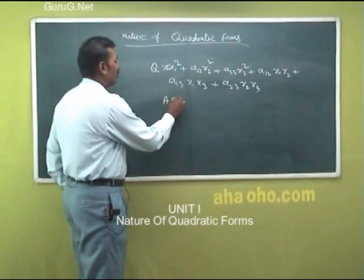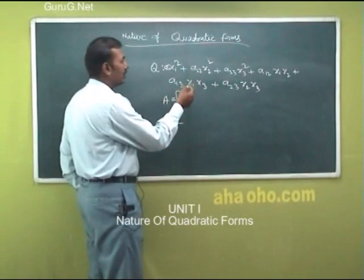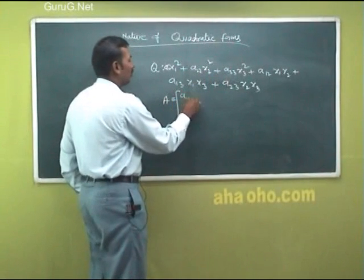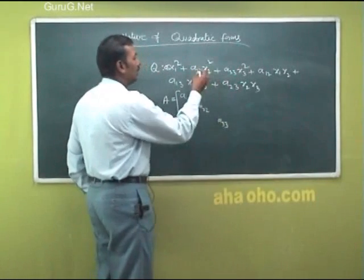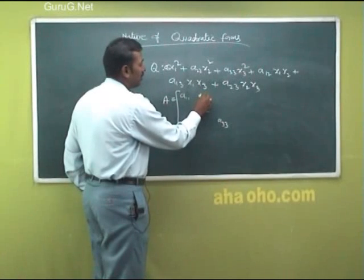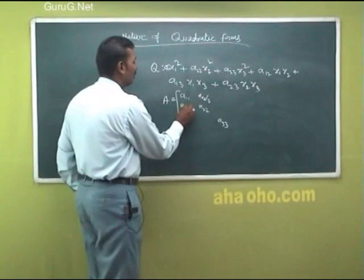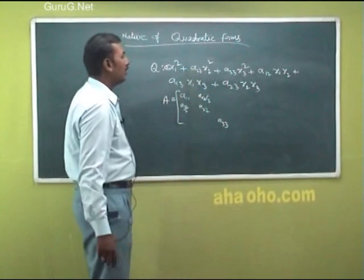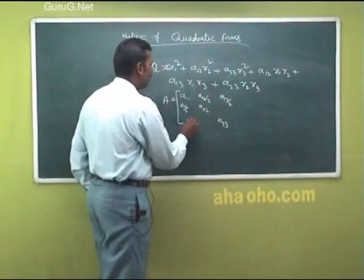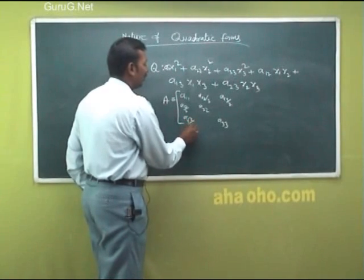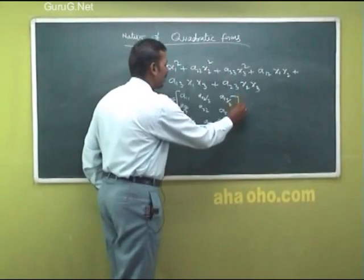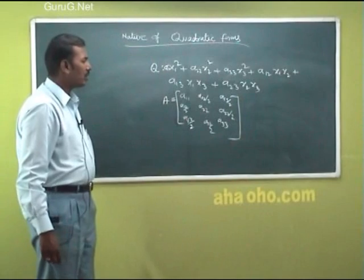Now, the matrix of the quadratic form. The coefficients of x₁², x₂², x₃² are the diagonal elements: a₁₁, a₂₂, a₃₃. The coefficient of x₁x₂ is a₁₂ — you divide that value by 2 and place it in positions a₁₂ and a₂₁. The coefficient of x₁x₃ is a₁₃ — divide by 2 and place in a₁₃ and a₃₁. The coefficient of x₂x₃ is a₂₃ — divide by 2 and place in a₂₃ and a₃₂. This is the matrix of the quadratic form. We have to calculate sub-determinants.